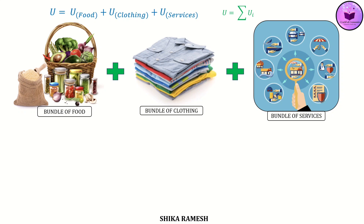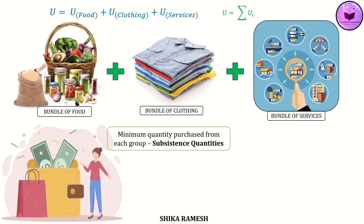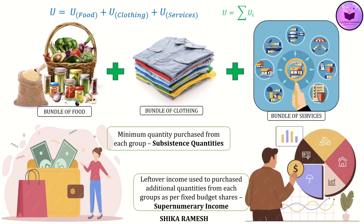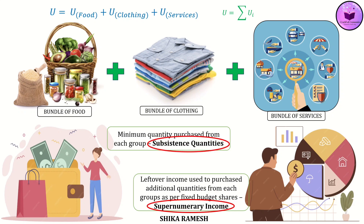Another important feature of the linear expenditure system is that consumers always buy some minimum quantity from each group, no matter what the prices are. These are called subsistence quantities, as they represent the bare minimum required to survive. After meeting these minimum needs, the income left over — called supernumerary income or discretionary income — is distributed across the different groups according to fixed marginal budget shares, which are assumed to be constant.